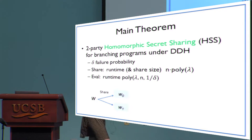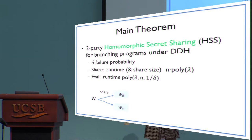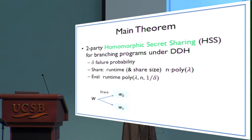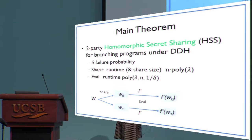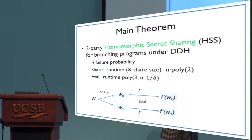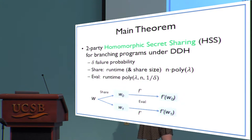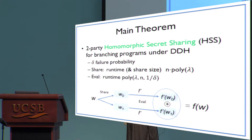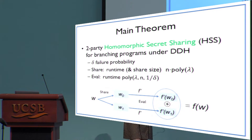In homomorphic secret sharing, I come with some secret and have a secret sharing scheme such that if I want to now get secret shares of a function of this secret, there's some procedure of homomorphically evaluating on the secret shares independently without communicating back and forth. The resulting output shares are exactly an additive secret sharing of this target function evaluation f on my input w.